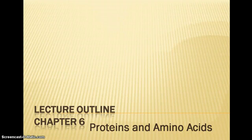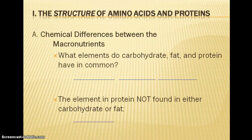This week we're going to be discussing material from chapter 6 — proteins and the building blocks of proteins, which are amino acids. We're going to start with the structure of amino acids and proteins, and first I just want to point out some chemical differences between the macronutrients.